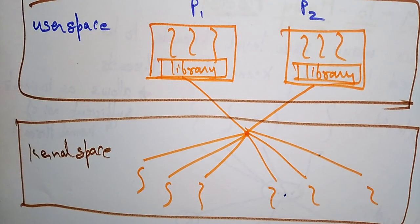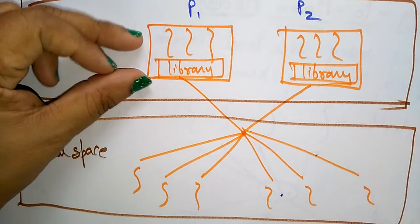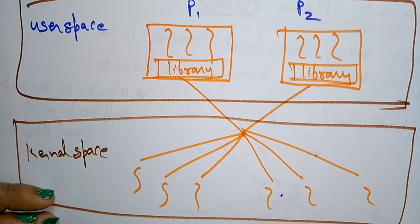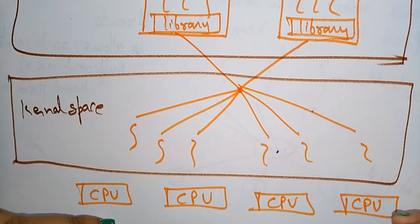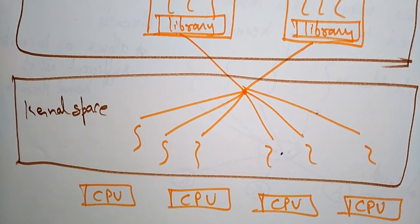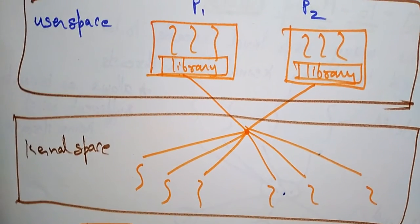So this is a many-to-many model. This is the representation of many-to-many model - many user level threads are communicating with many kernel level threads and executing in the multi-processor system.